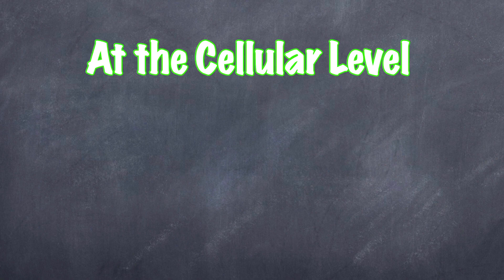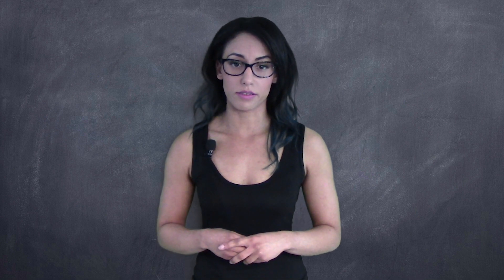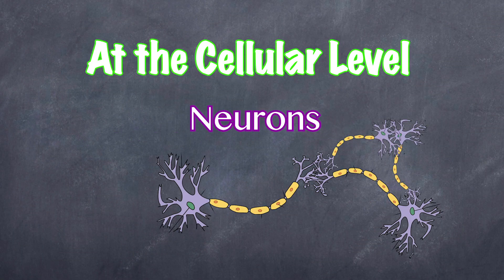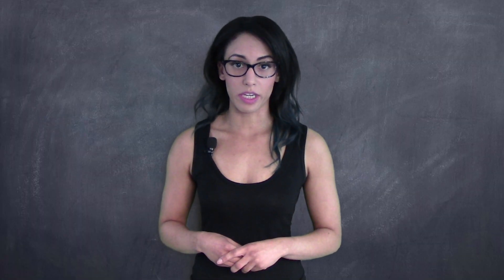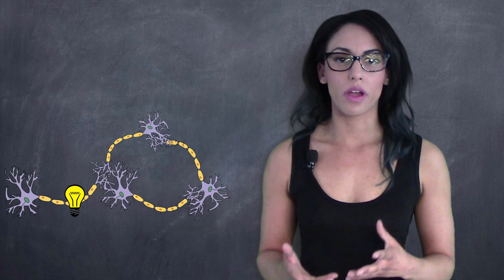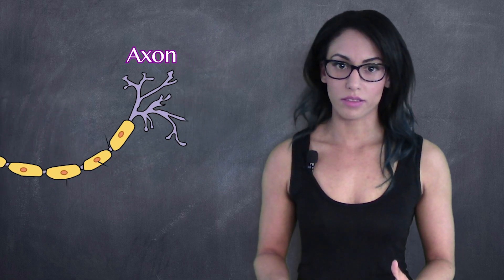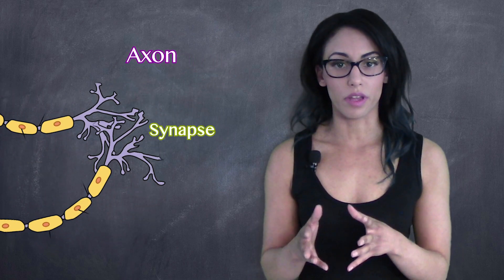Generally, our brain consists of two cell types: glial cells, which are cells that support by nourishing and insulating the second cell type, neurons. Neurons are cells that communicate with each other in order to promote a change or response brought about by thoughts, actions, and/or sensory information. Messages transfer in the form of electricity from neuron to neuron, from the cell body of the neuron to the axon, where at the end of the axon is the synapse, where information can be passed to another neuron.